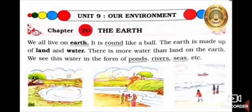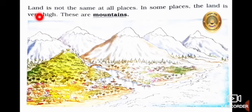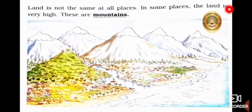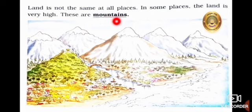See, children, these are the pictures. The water is seen in the form of ponds, rivers, and seas. Land is not the same at all places. In some places the land is very high — these are mountains, M-O-U-N-T-A-I-N-S, mountains.